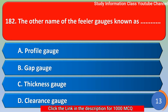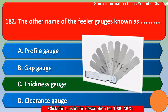Next question: the other name of the filler gauge is known as — option A profile gauge, option B gap gauge, option C thickness gauge, option D clearance gauge. The correct answer is option C — thickness gauge.